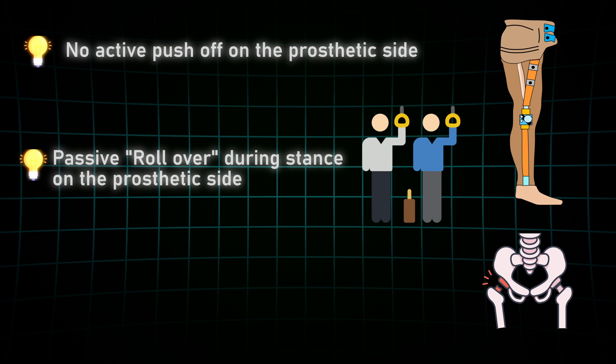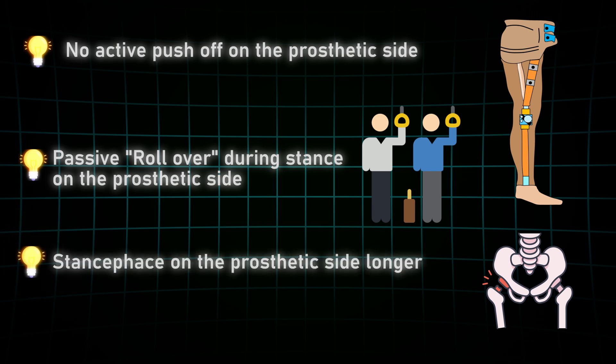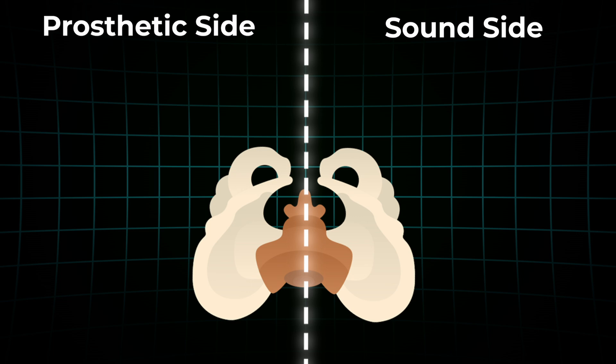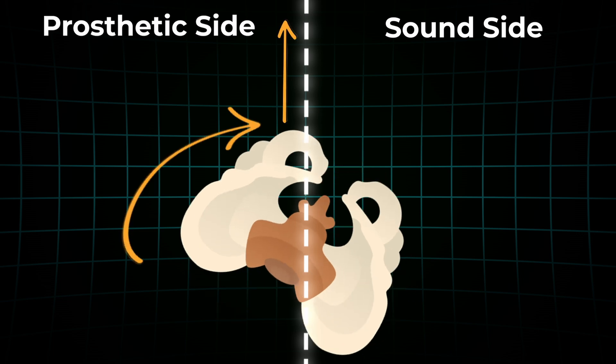Unlike other amputation levels, hip disarticulation users spend more time standing on the prosthetic side during walking. Why? Because it takes extra time for the passive mechanics to bring the body forward, so the sound side can take over and drive the next step. Controlling the prosthesis relies heavily on the core and trunk muscles.